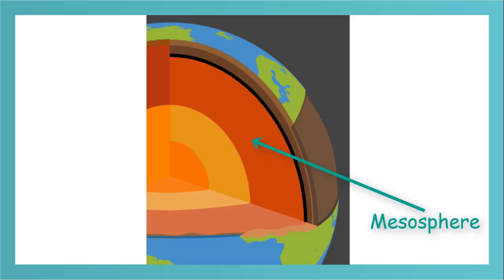The mesosphere is the lowest layer of the mantle and is very hot. Because of the temperature differences between the core and the crust, the mesosphere is able to flow.